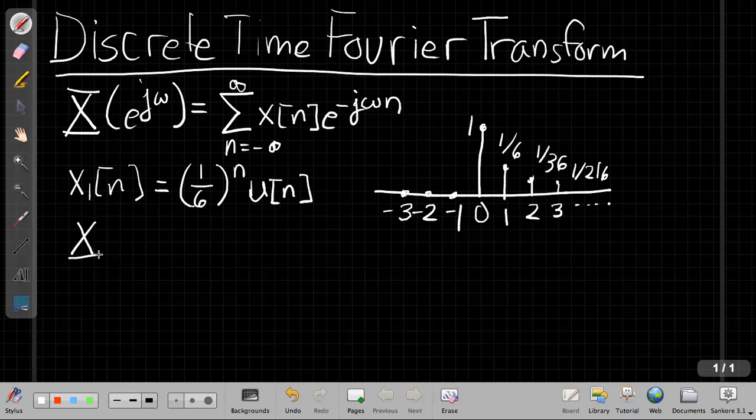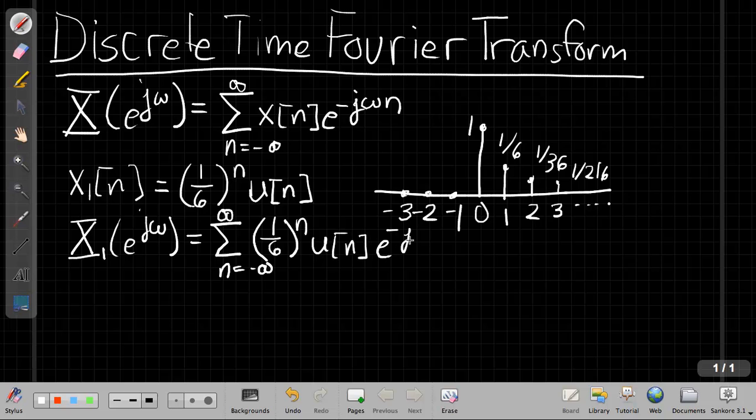So let's see how we use the definition of the Fourier transform to find X1 of e to the j omega. So I say this is the sum as n goes from minus infinity to plus infinity of, if I put this in for X1 of n, one-sixth to the n, u of n, e to the minus j omega n. Now I say this u of n just means I can get rid of the negative half of the sum. So the first thing I can do to simplify this is to say all the terms in the sum for n less than zero are going to be zero.